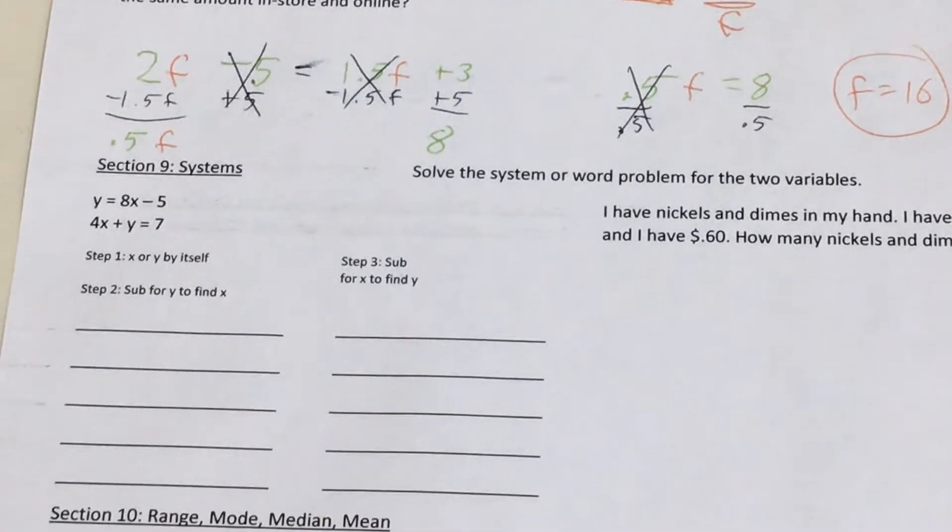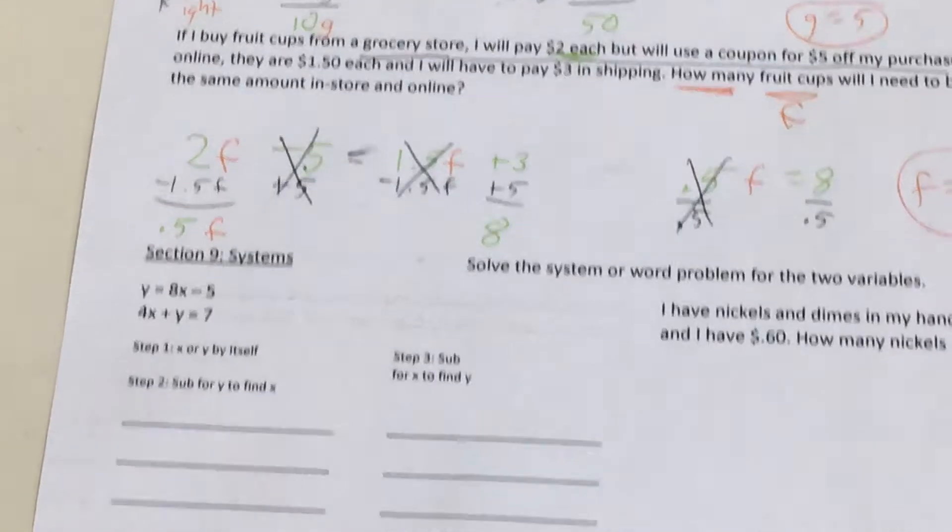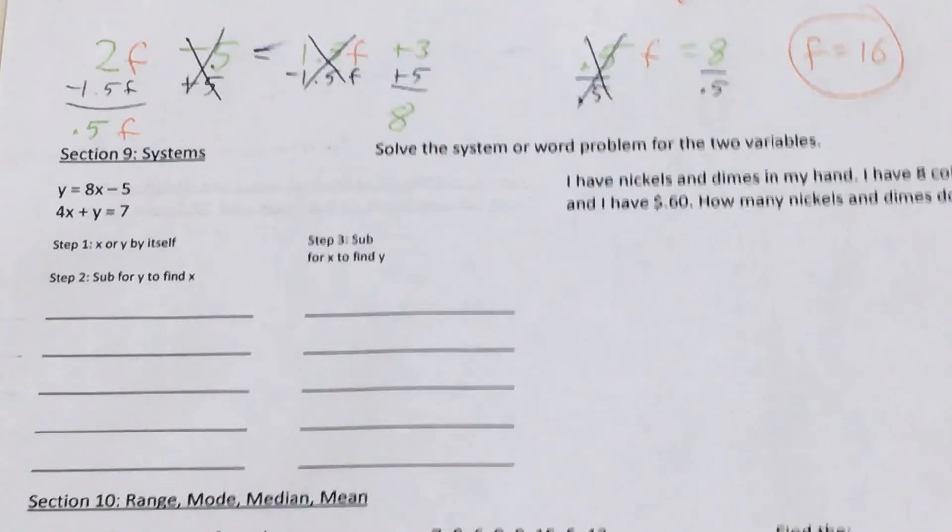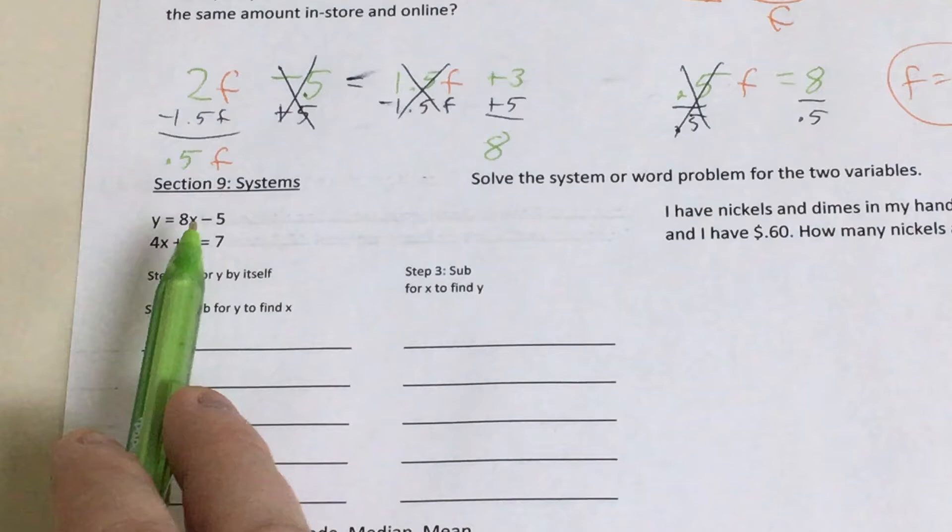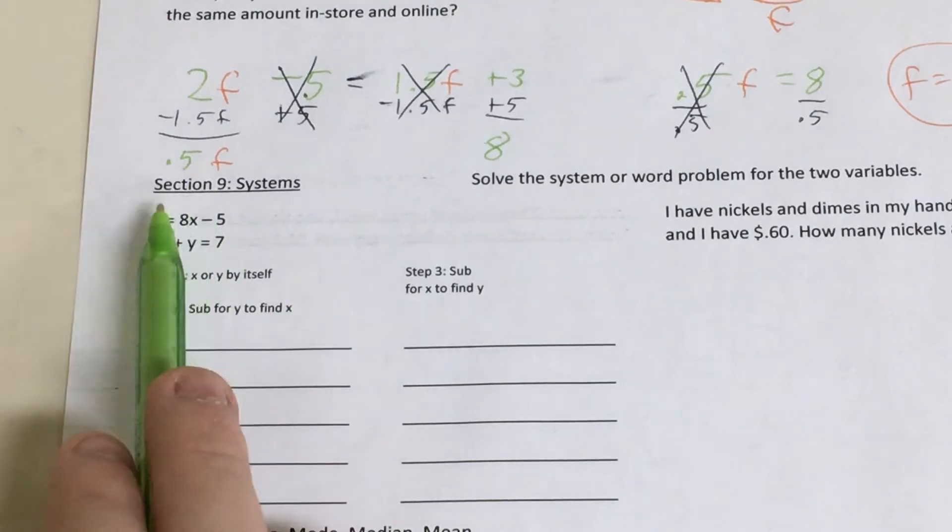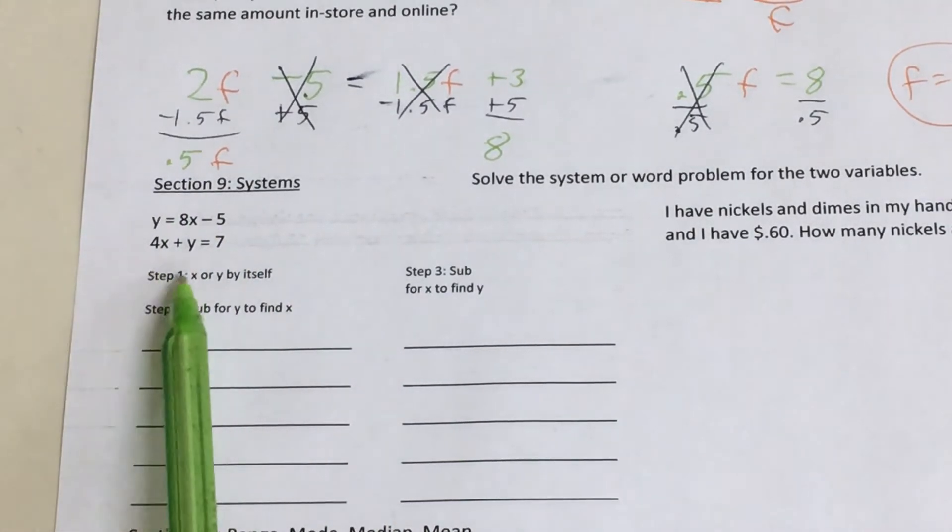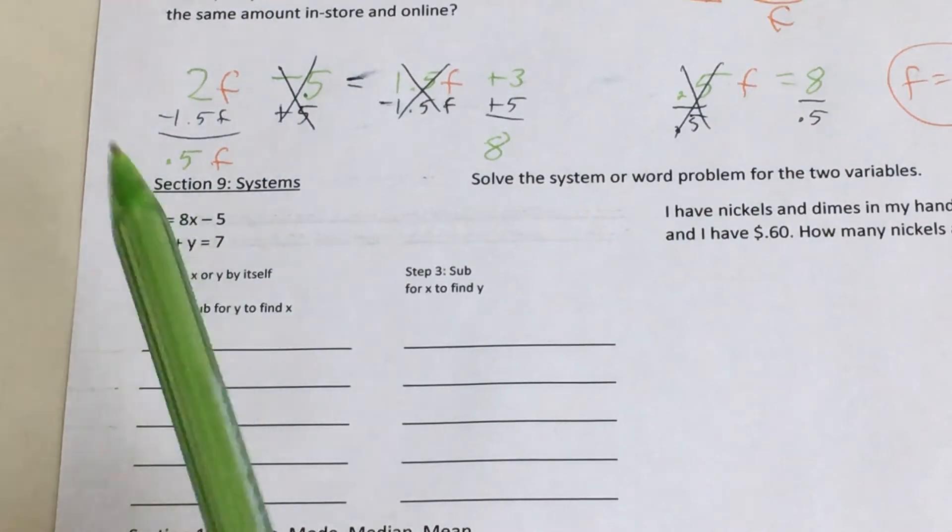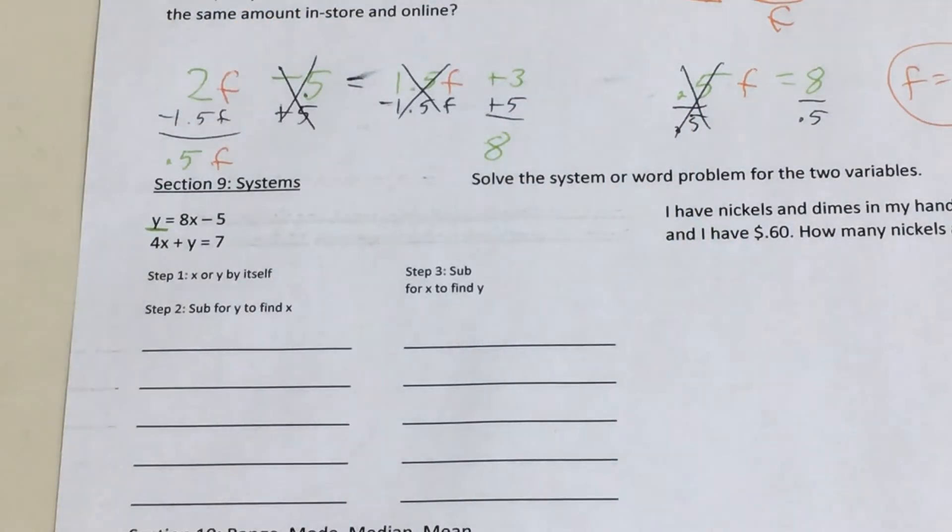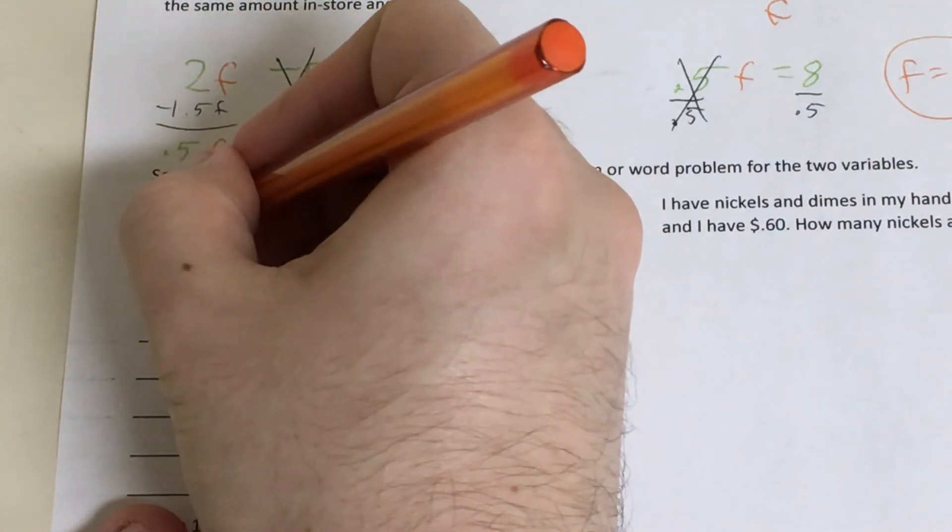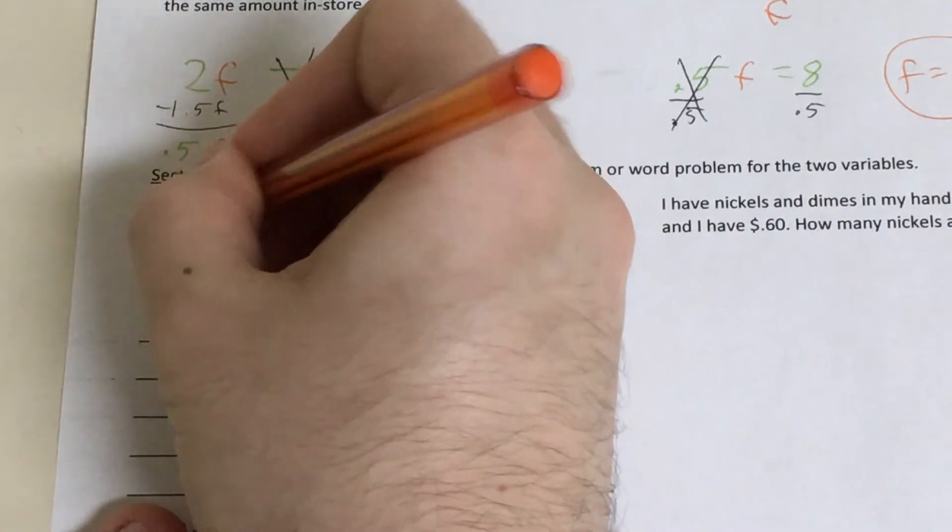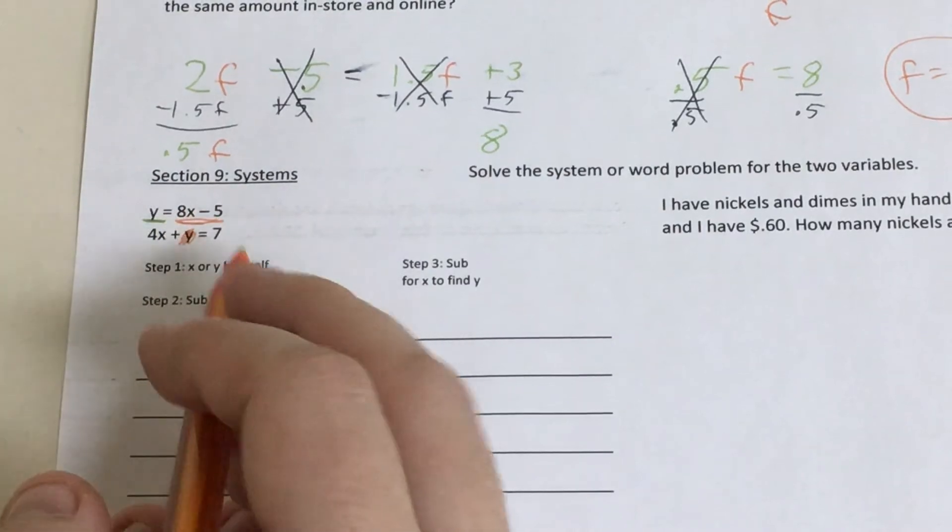So if I come down, that's the VOLNAR word problems piece. If I come down to systems, I have two different types of problems here. First problem I have is a substitution problem. So this is going to be the problem where I start by looking at my two equations where I have y and x. I'm trying to figure out both at the same time. First thing I need to do is see if I have x or y by itself. Thankfully, I have y by itself up here, so that takes away some of the work from me. So after that, I move on to step two, where I substitute for y.